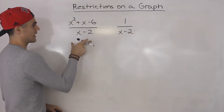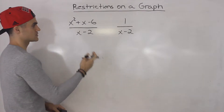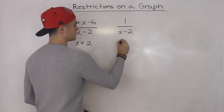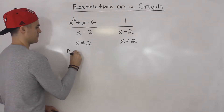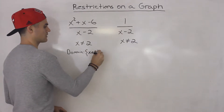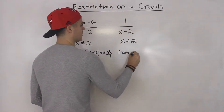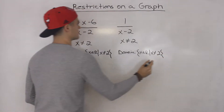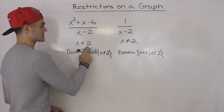Notice that the factor x minus 2 is the same in both expressions. So the restrictions for both of these is x cannot equal 2. The domain for both of these — if you remember, we talked about domain — it's always x can be anything except for the restrictions. So the domain would be the same: x can be anything but it can't be 2, because both cases would make the denominator equal to 0 if x is equal to 2.